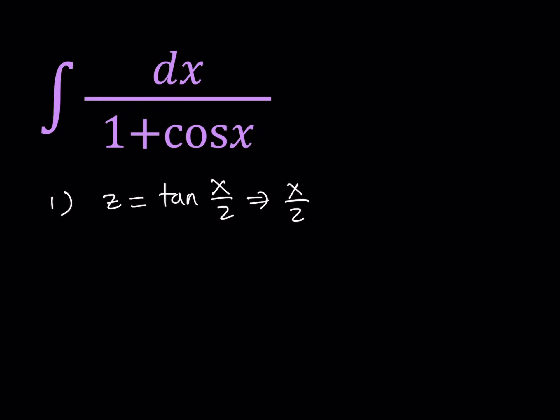From here, if we inverse tan both sides, we're going to get x over 2 equals tan inverse of z. I can multiply both sides by 2, so x equals 2 tan inverse of z. Then I can just d both sides. To find dx, I'm going to differentiate tan inverse of z and multiply by 2. That's going to be 1 over 1 plus z squared times dz, with a 2 in the numerator. So dx equals 2 dz over 1 plus z squared.